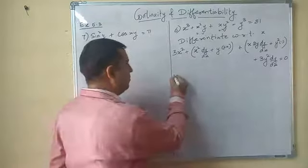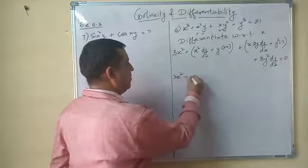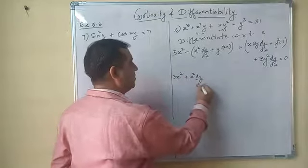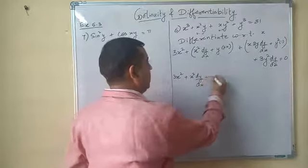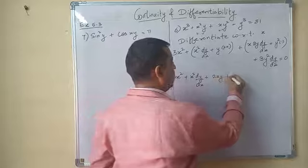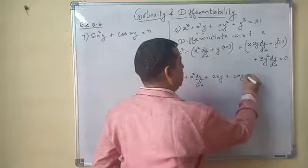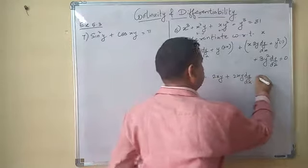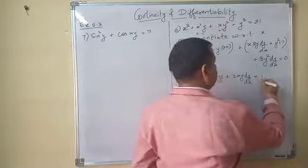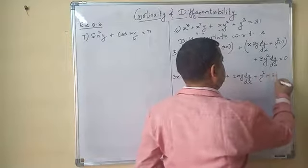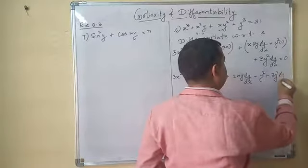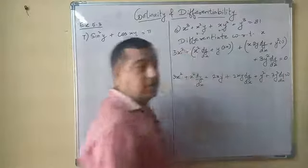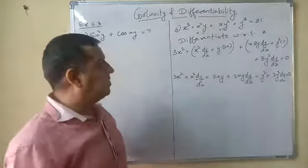This gives: 3x² + x²·(dy/dx) + 2xy + 2xy·(dy/dx) + y² + 3y²·(dy/dx) = 0.